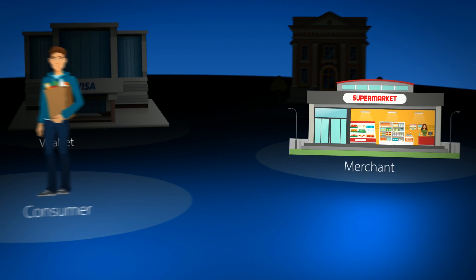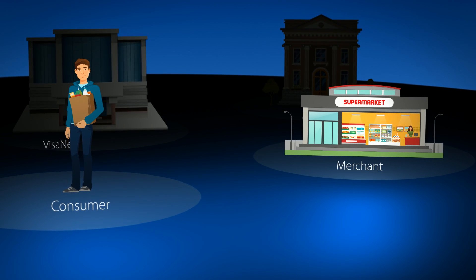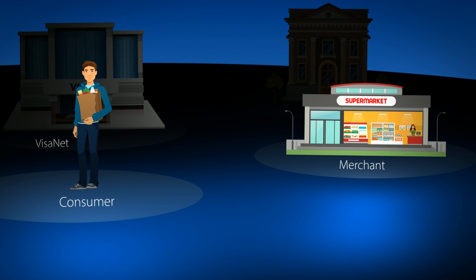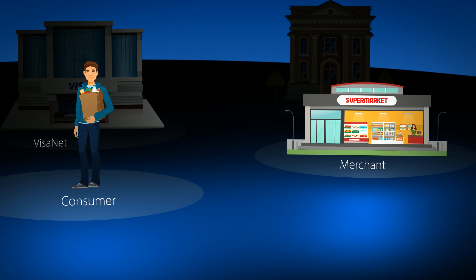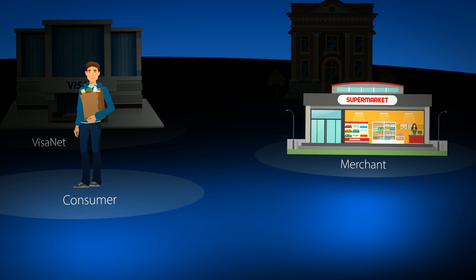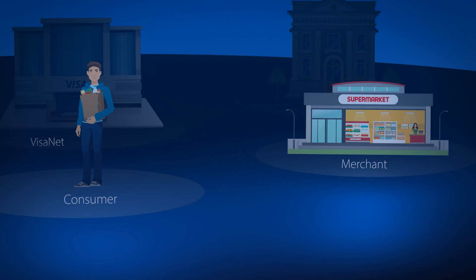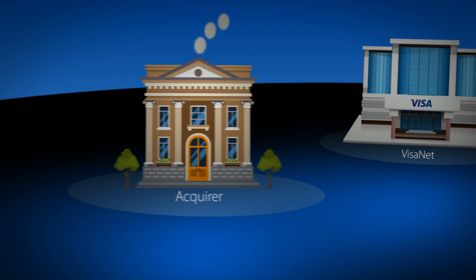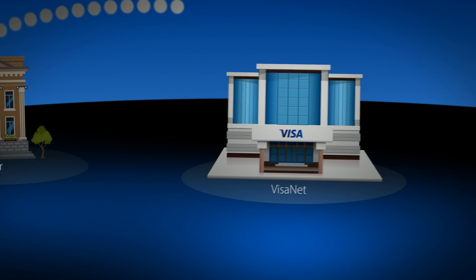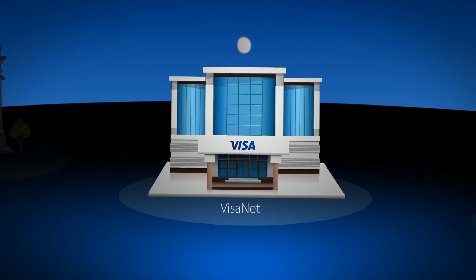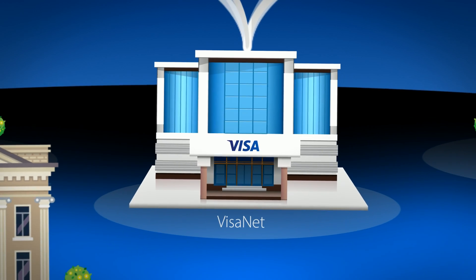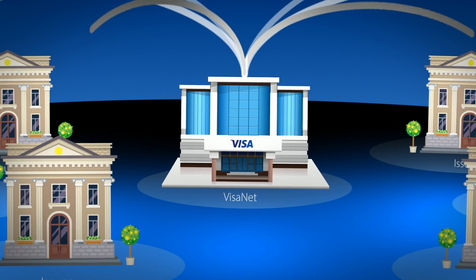As far as the consumer and merchant are concerned, the transaction is now complete. The consumer has the groceries and the merchant knows that the acquirer will pay them within the terms of their agreement. But this is just the first step of the transaction process. The next step is called clearing. After the transaction is complete, the acquirer formats the data and transmits the final transaction and cardholder details to VisaNet.